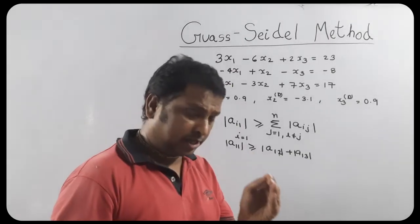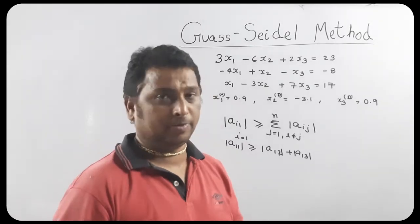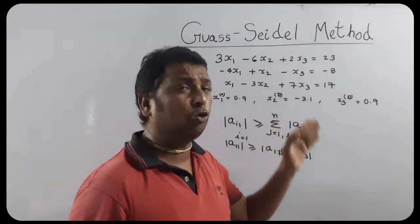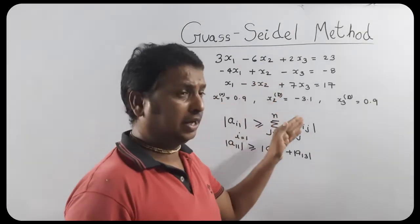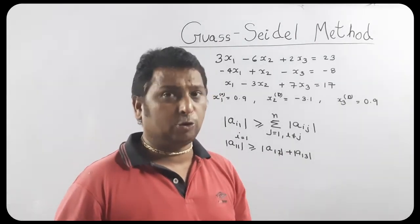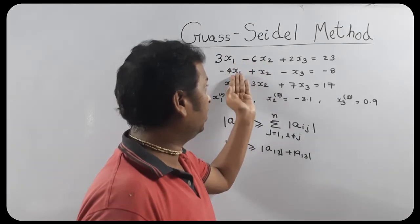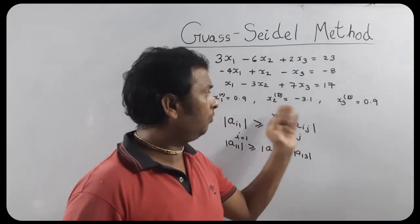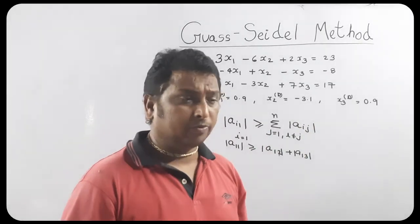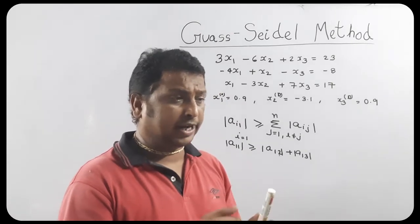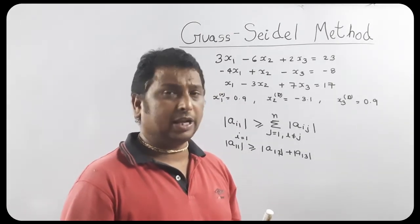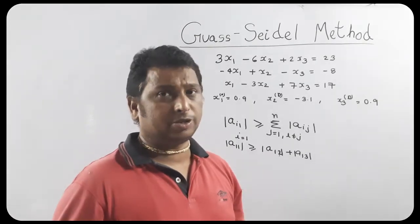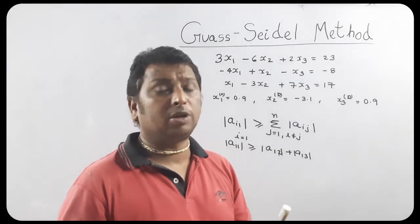What happens if we do not write this system in diagonally dominant form? You can verify — if you go directly and apply the same procedure already explained in Gauss-Seidel method, meaning from the first equation you calculate x1, from the second you calculate x2, and from the third you calculate x3, and go ahead with starting values, you will find out it diverges. Divergence is there. The solution will not converge.